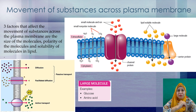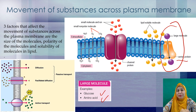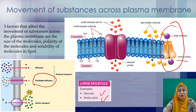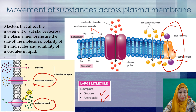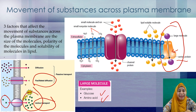Now we look at the movement of large molecules across the plasma membrane. Examples of large molecules are glucose and amino acid. From the diagram, we can see that these large molecules use carrier protein to pass through the plasma membrane. The large molecules move from higher concentration to lower concentration, so it is still under diffusion, but it is called facilitated diffusion because it needs help from the carrier protein. For active transport, the movement of substances is against the concentration gradient — meaning substances move from lower concentration to higher concentration — and the movement requires energy, that is ATP.